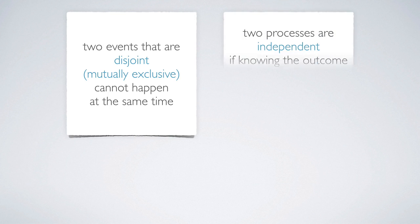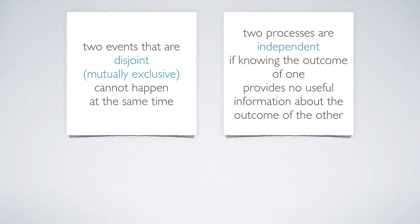As a quick reminder, two events that are disjoint, also called mutually exclusive, cannot happen at the same time. While two processes are independent if knowing the outcome of one provides no useful information about the outcome of the other.